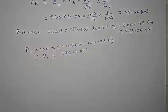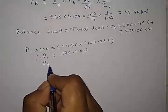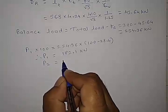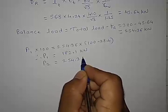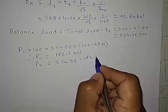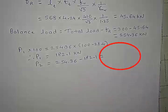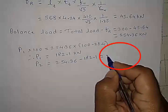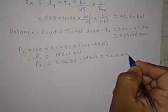Now if we just deduct this one from the remaining load, we will get the P2 as well. So we will get P2 will be equal to 254.36, which we got it here, minus 182.1. So here we will get it around 72.2 kN.